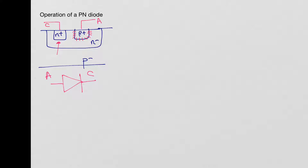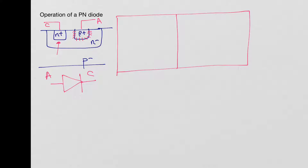Now let's look at how the diode operates by examining just the PN junction. We draw the PN junction with P type material on one side and N type material on the other. NA is the acceptor concentration — the impurity concentration on the P side, in units of per centimeter cubed, which is the number of boron atoms per centimeter cubed. On the N side we have ND, the donor concentration. So acceptors are on the P side and donors on the N side.